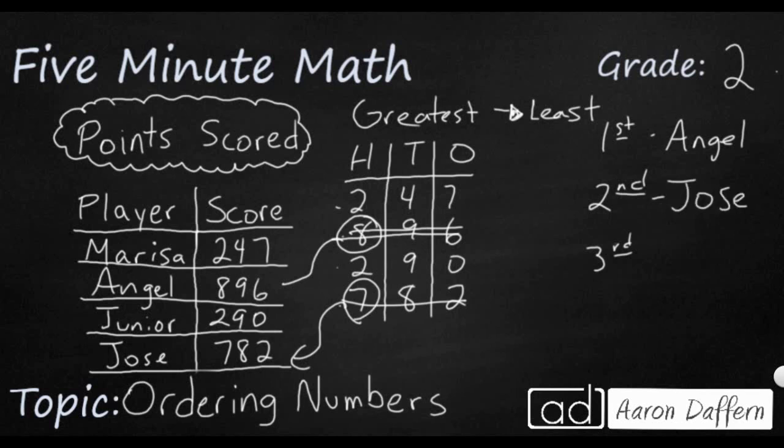Our third place is a little bit tricky because look, we've got 200s, 247, 290. So two of them. And so if both of these are the same, we're going to circle both of these. Now we need to move to the next place value to the right. Now we're going to look at the tens place. And I've got a 4 and a 9. Nine is larger than the four. So it is going to be Junior. Junior gets third place.